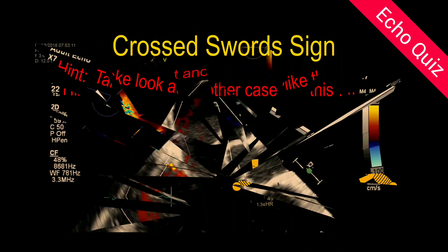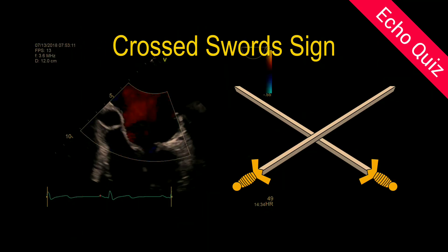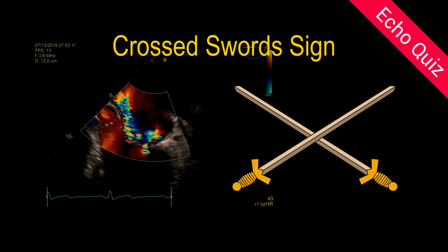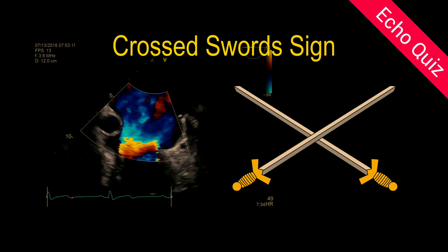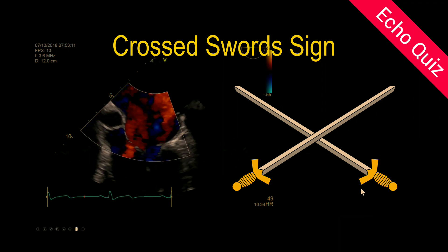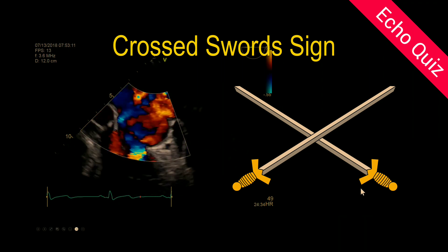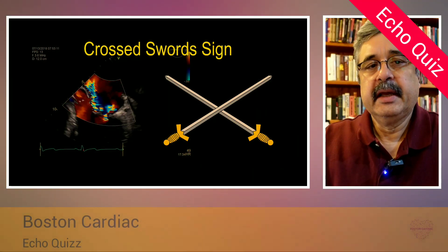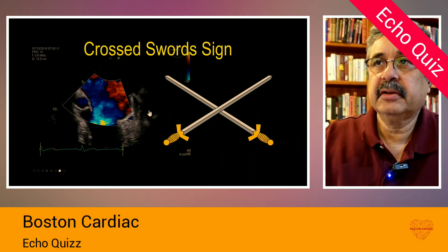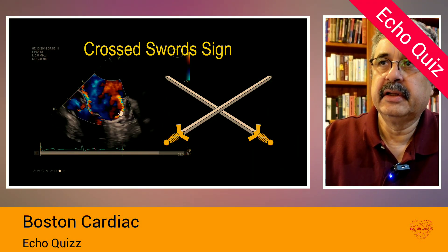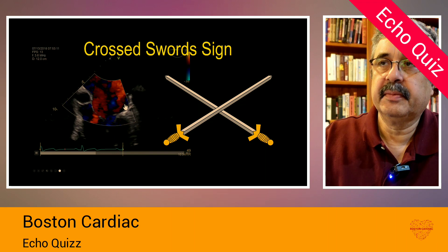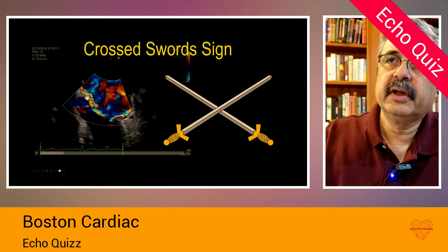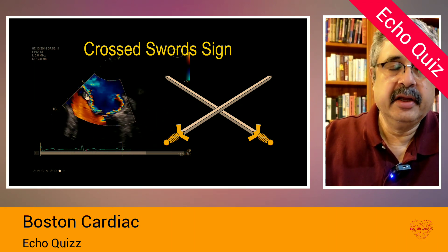The diagnosis is the crossed sword sign, which means that there are two divergent mitral regurgitation jets — one that is going in the posterior direction and another jet going in the anterior direction.